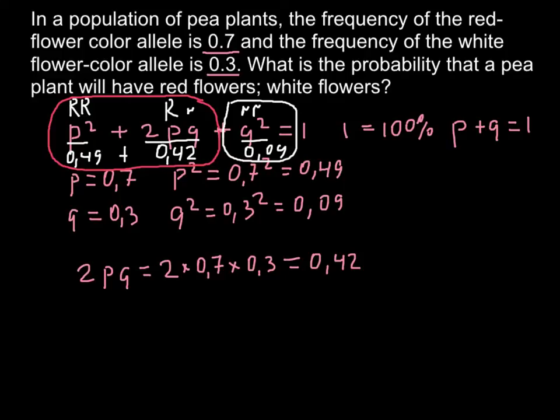So we would have 91% red flowers and we would have 9% white flowers.